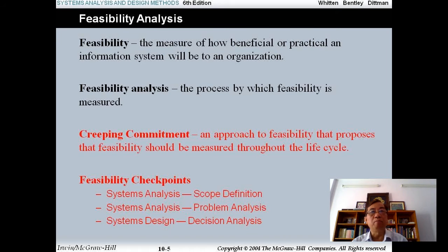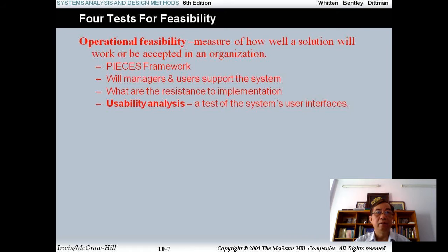I will discuss with you the four tests for feasibility. The first one is operational feasibility, the measure of how well a solution will work or be accepted in an organization. I mean the PIECES framework. Will the managers and users support the system? What are the resistance to implementation? When you implement an IS, maybe you change the role of people, maybe some people have no job, they move to a new job, and they will receive resistance from the environment. I mean the usability analysis, a test of the system user interface.